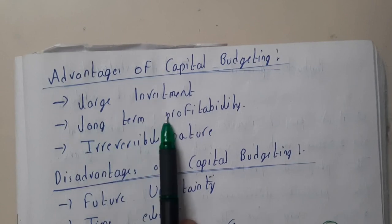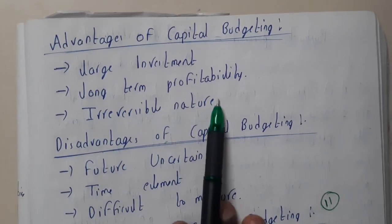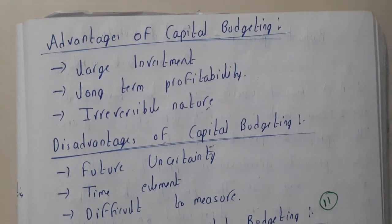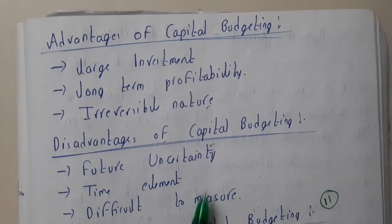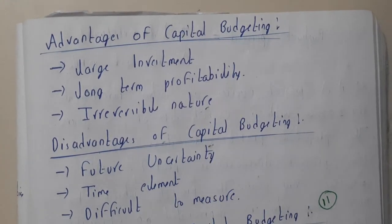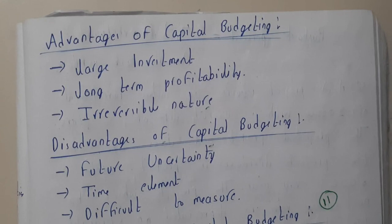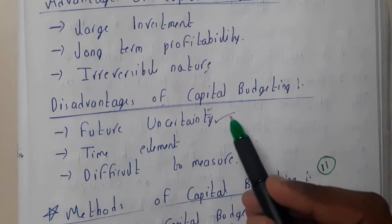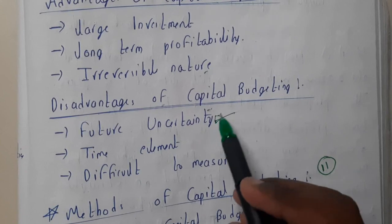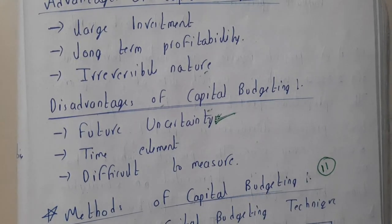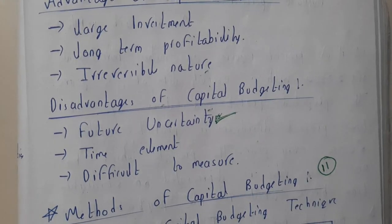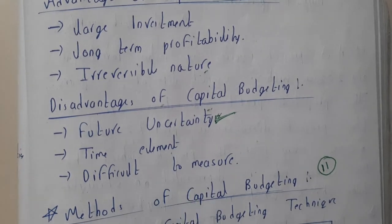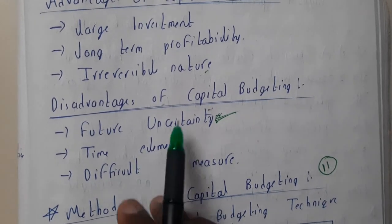What are the advantages and disadvantages? Advantages of capital budgeting: you get long-term profits from large investments, and it is irreversible in nature — if you want your money back you can get it but you need to do so at the proper time, otherwise you will be at a loss. Disadvantages: future uncertainty — you cannot say you'll get your exact money back; you may get a huge profit or you may get a huge loss. This is uncertainty.